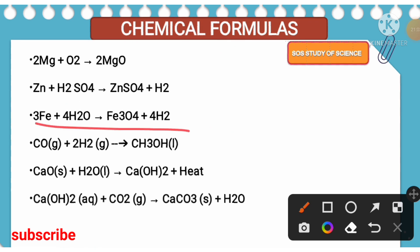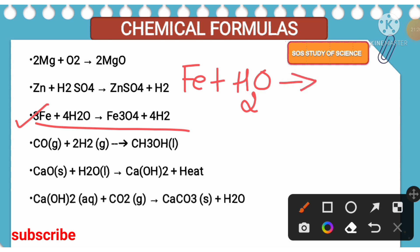Iron combines with water to form iron oxide and hydrogen gas is liberated. I will help you to balance this equation. In the examination, if they give iron combines with water, how do you balance this particular equation? I will show you this remaining equation; you try the others on your own. This is the simple unbalanced equation — how to balance it? Write the elements present in the reactant side as well as in the product side.